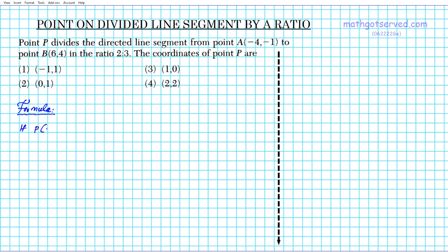If point P with coordinates X sub P and Y sub P divides a line segment AB from A coordinates X1, Y1 to B with coordinates X2, Y2 in the ratio A to B.